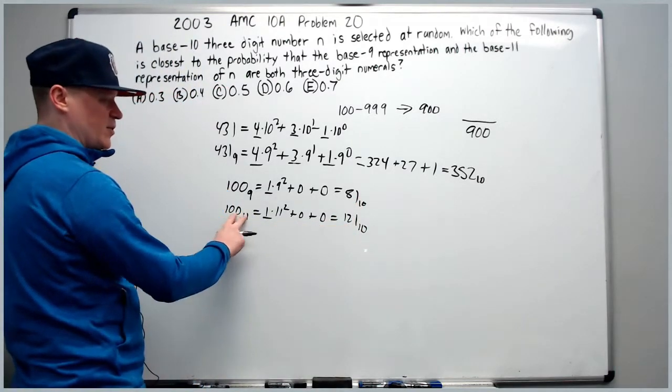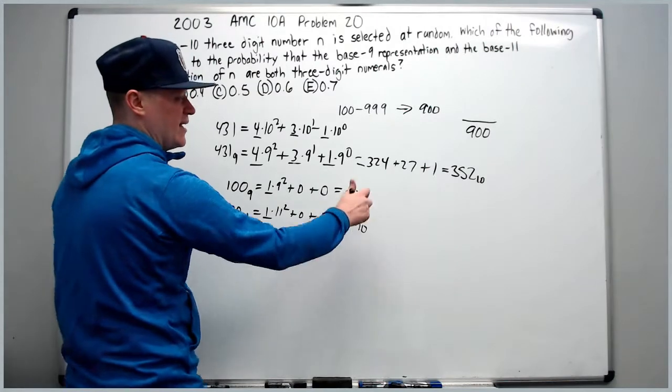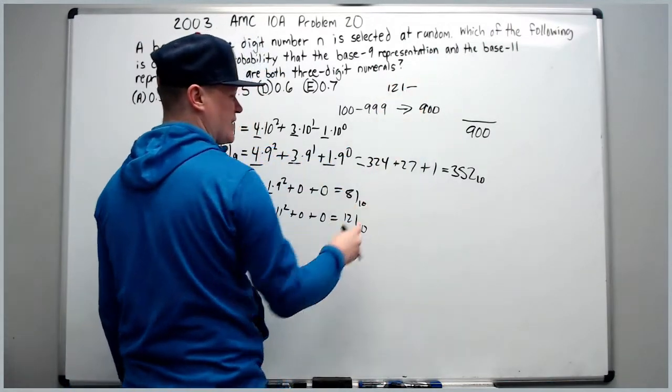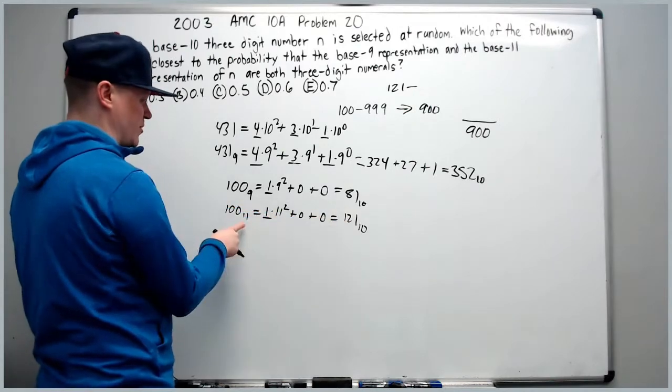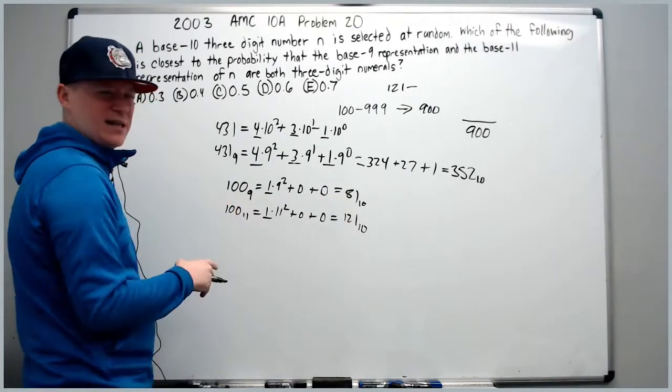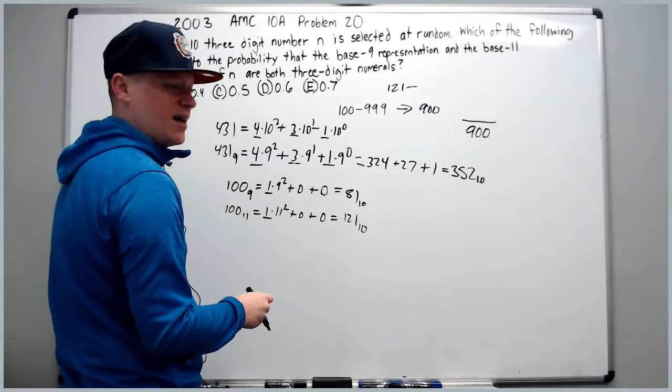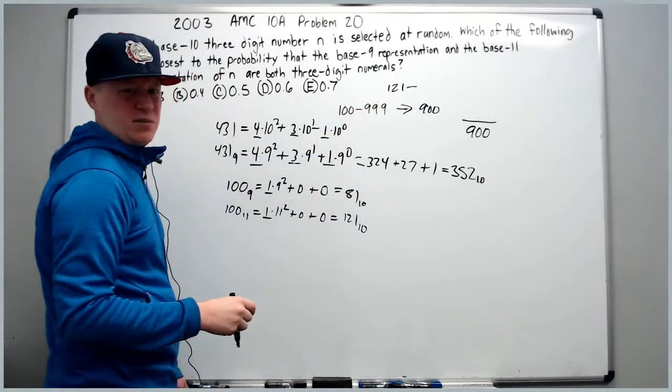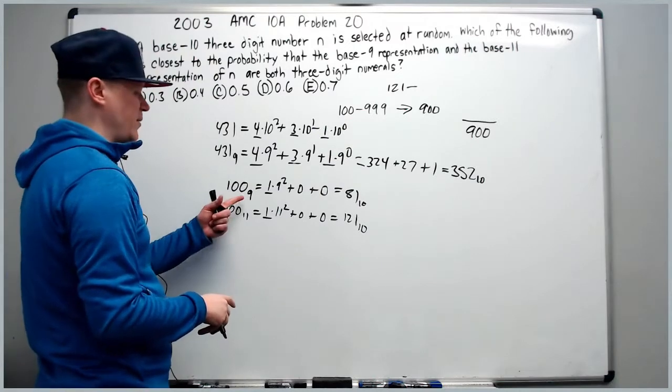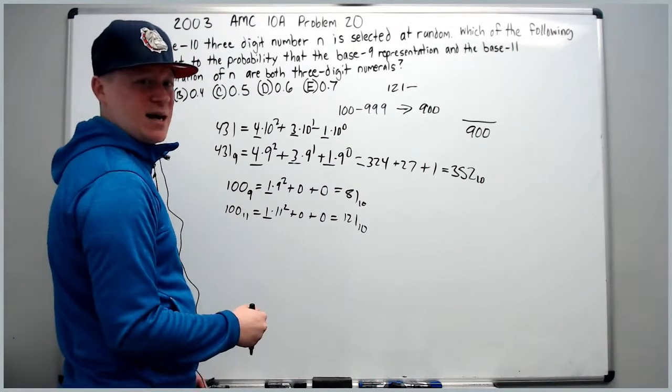Because 100 base 11 is 1 times 11 squared plus 0 plus 0 equals 121 base 10. So this number, 121 in base 10 is the smallest base 10 number that we can choose. It will definitely come out to be, it's greater than 81, so it will be at least 3 digits in base 9. And since base 11 represented the lower bound of numbers that we want, we can probably expect base 9 to be the upper bound.